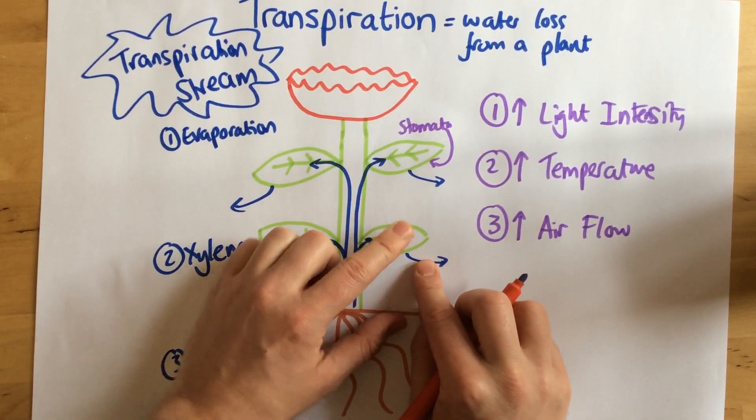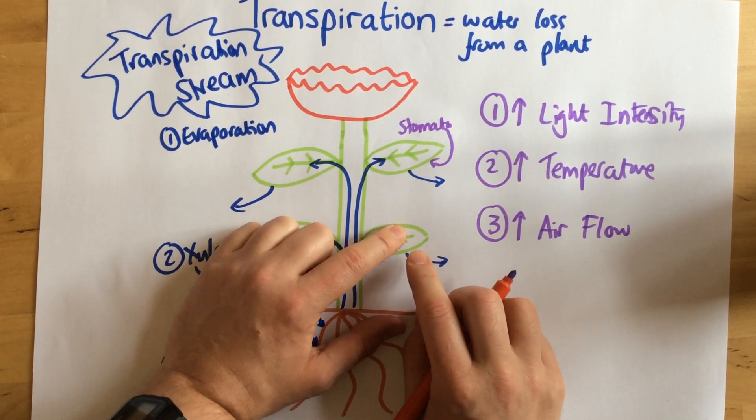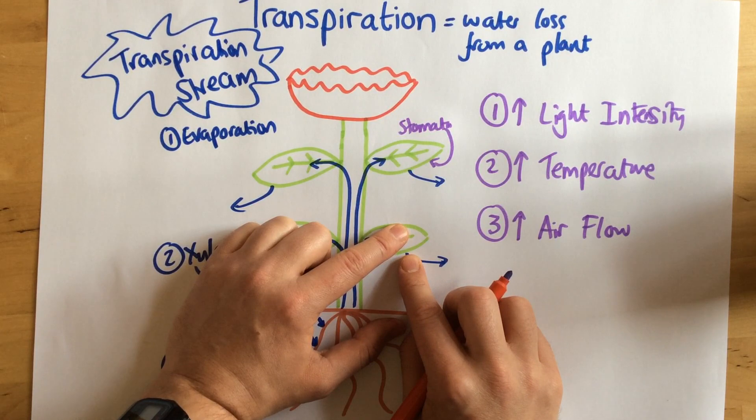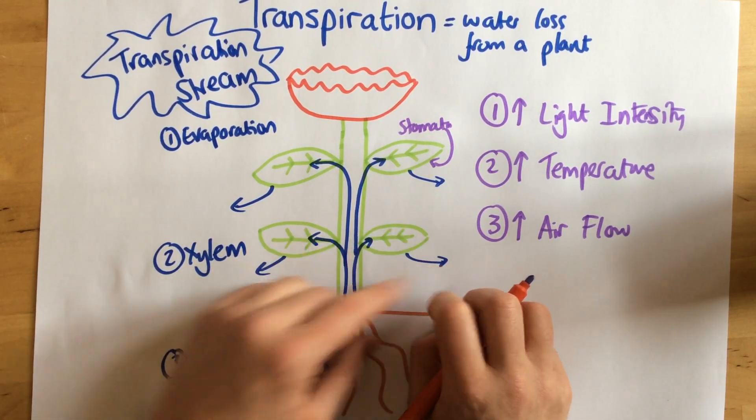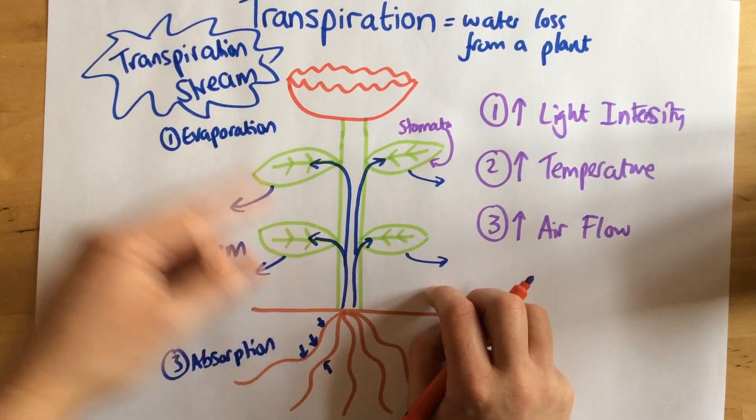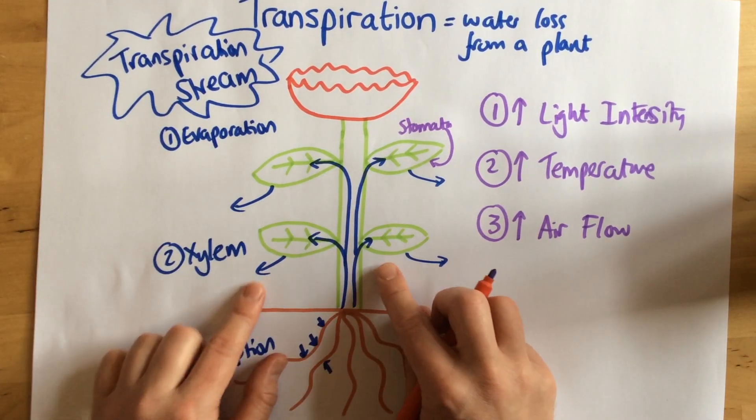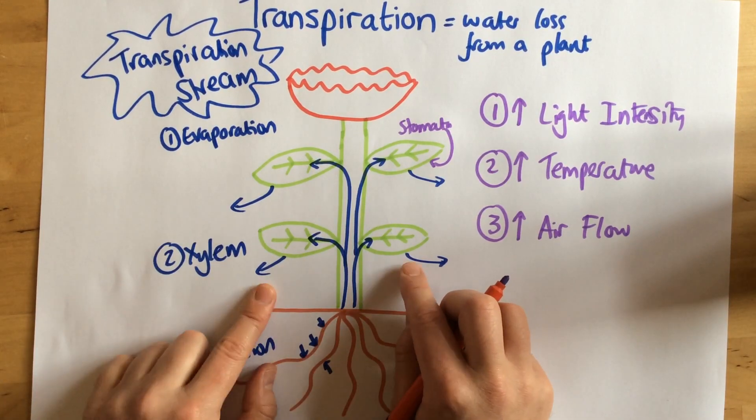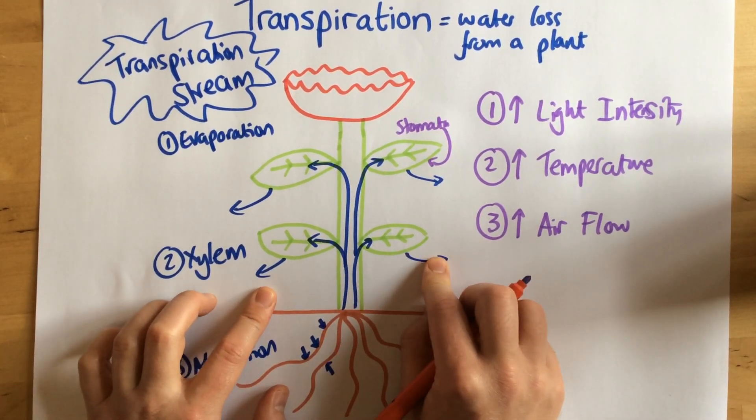Because if there's a high concentration in the leaf and a very low concentration of water outside the leaf, then there's going to be more diffusion of water out. So if we've got wind constantly removing the water vapor just outside the leaf, then our level of diffusion out of the leaf is going to be greater. Therefore, our rate of transpiration is going to be better.